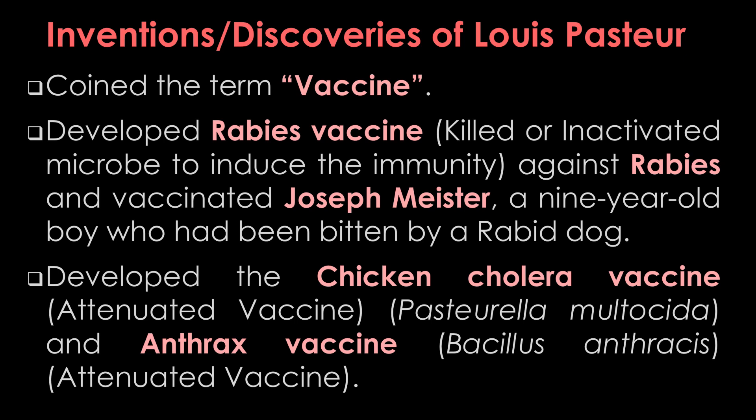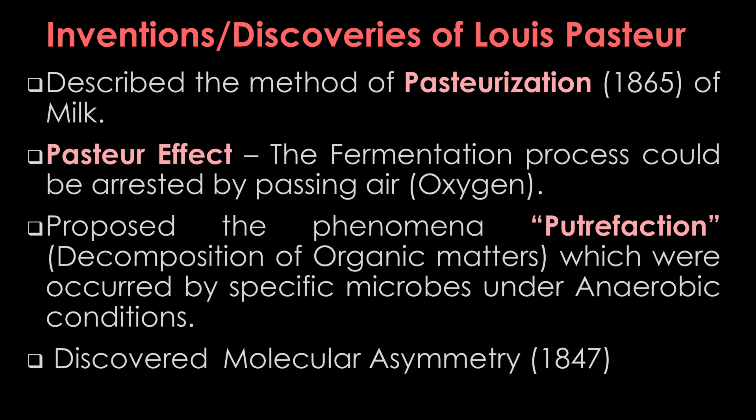Pasteur developed a vaccine against anthrax, caused by Bacillus anthracis. Both the chicken cholera vaccine and anthrax vaccine are attenuated type vaccines. He also described pasteurization — fractional sterilization of milk. Pasteur unexpectedly discovered the Pasteur effect: that the fermentation process could be arrested by passing air (oxygen) through the fermenting fluid.